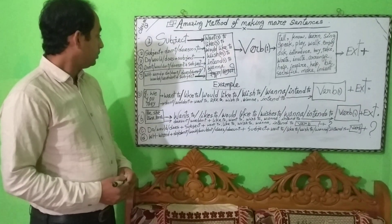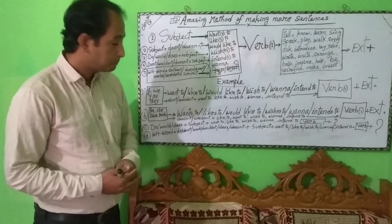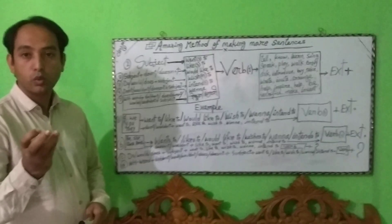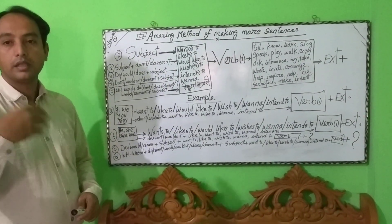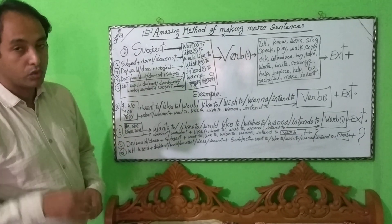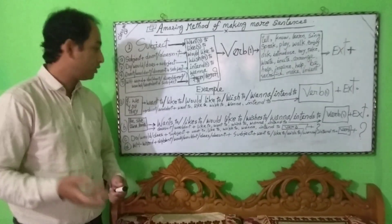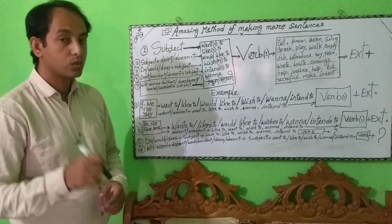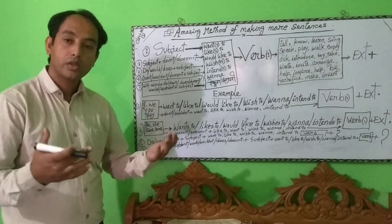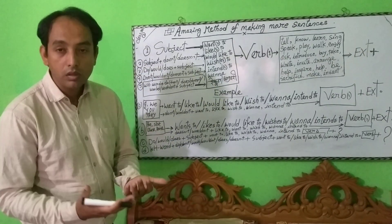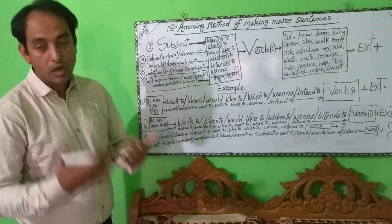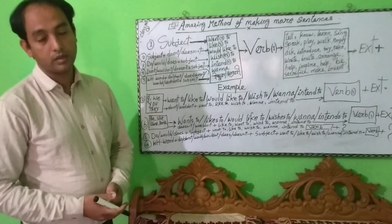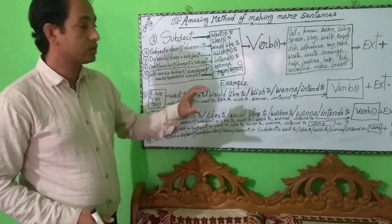Now if you want to make an interrogative sentence using WH words — what, when, which, where, how — you can use WH words at the very beginning of a sentence. Using 'how' you can also make: how many, how long, how much, how often — these are also part of WH words. For example: 'What do you want to tell?' 'What do you wish to tell?' 'What do you intend to tell?' 'What do you like to know?' 'What do you like to learn?'